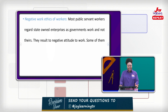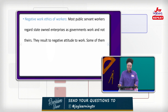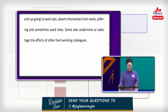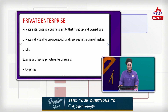Now let's look at negative work ethics. Most public servant workers regard state-owned enterprises as government work and not theirs, resulting in negative attitudes to work. Some end up going to work very late, absenting themselves from work, or even playing lotto in the workplace while they are supposed to be working. Some also undermine or sabotage the efforts of hard-working colleagues, which doesn't augur well.